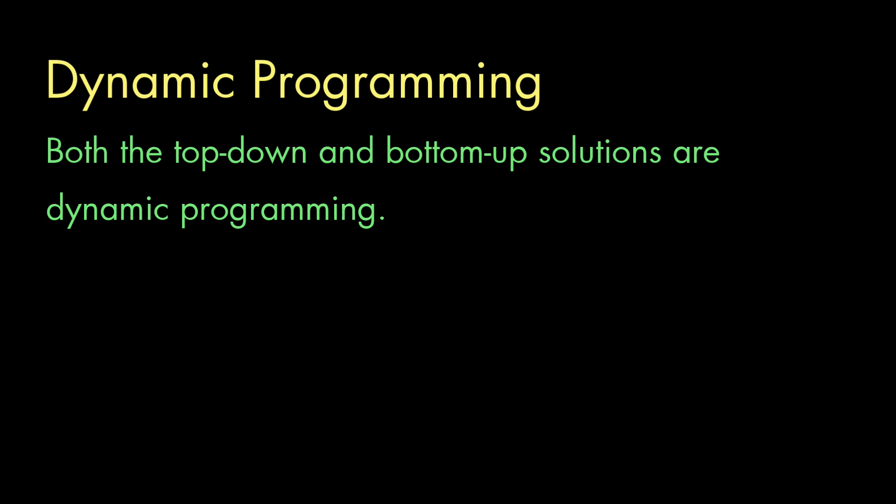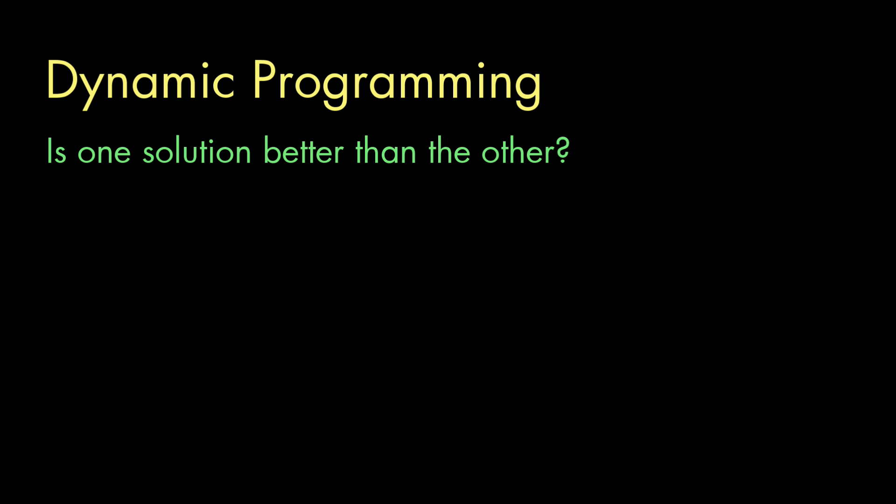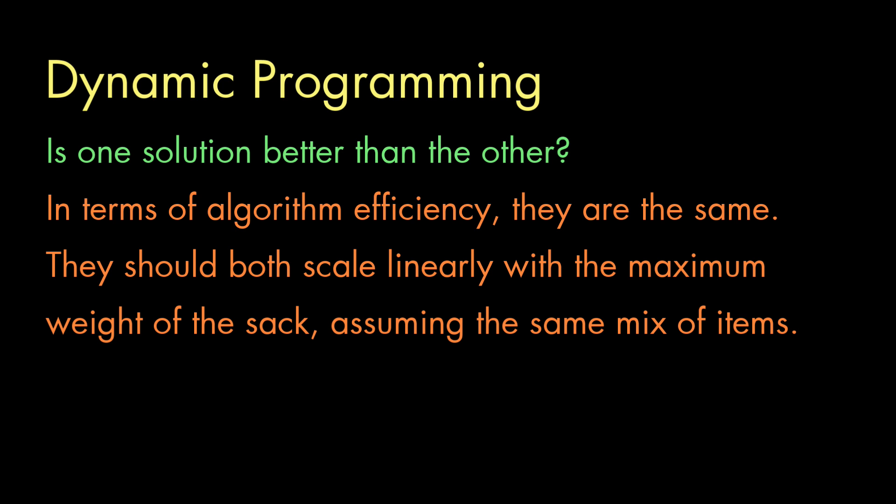So, both of these solutions to the knapsack problem are considered dynamic programming. But the original one was top-down and the second one is bottom-up. Now, you might be wondering, is one of these solutions better than the other? Well, maybe. In terms of efficiency, as that is officially defined, and if you don't know what that means, you can check out another one of my videos on that too, but in terms of efficiency, they're both the same. Basically, they're linear in relation to the maximum weight in the sack, assuming that the mix of items doesn't change.